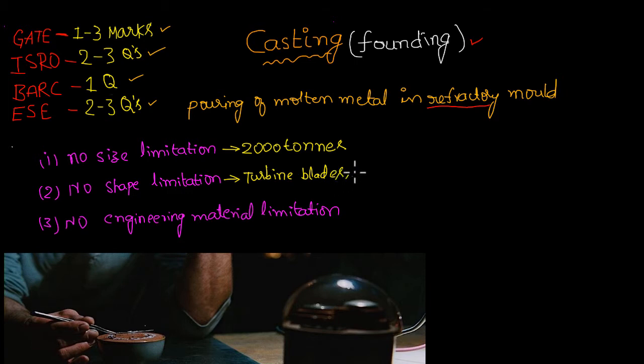And the third one is no engineering material. We can cast any engineering material, it may be ferrous or non-ferrous. Even if it is not a metal also we can cast it, for example plastic. We can cast plastics and metals also, ferrous or non-ferrous anything.